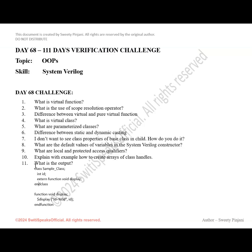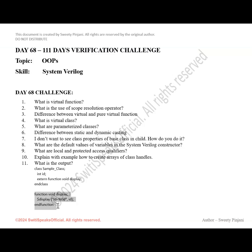Here I have a code — you need to tell me what the output is. You can try to run this code and see. I have a class called 'sample' which has a class variable 'id' of type int. There is a function 'display' — note that this function is declared as external, meaning it will be defined outside the class. Outside the class you are actually defining this function. Here inside the class you are just declaring that there is going to be an external function 'display', and outside the class you are defining it. What this function does is display the value of id.